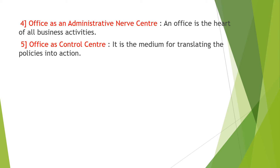The next point is office as an administrative nerve center. An office is the heart of all business activities. Here, information on purchase, sales, finance and communication gets circulated. The last point is office as a control center. It is the medium for translating the policies into action. When the business grows, different departments come up with different jobs to be done. Departmental heads have delegated power with which they take action and decisions. These were the various points of importance of office management.